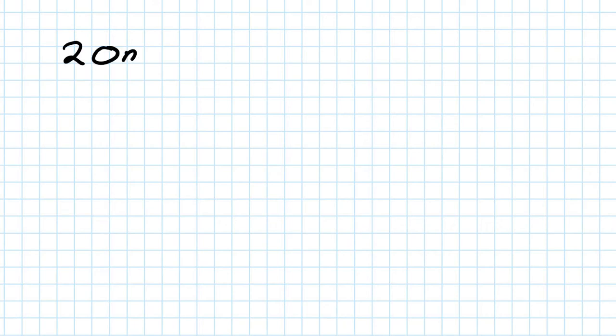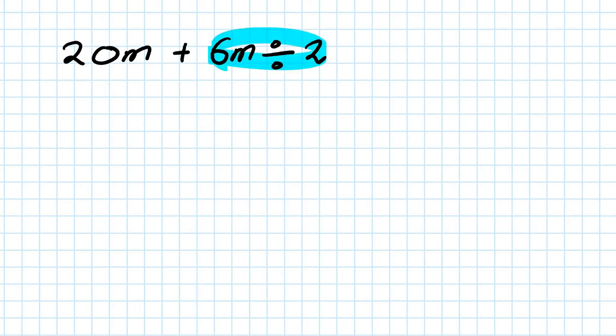Next one: 20m plus 6m divided by 2. Step number 1, I simplify this term first. So 6 divided by 2 is 3.